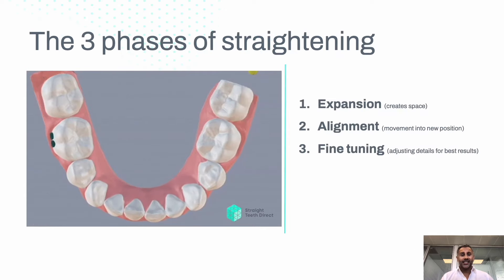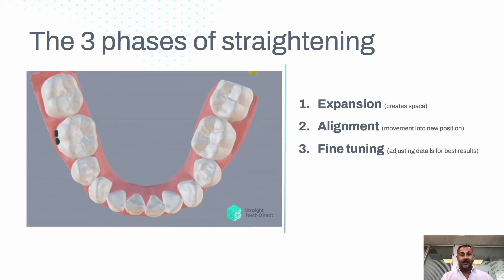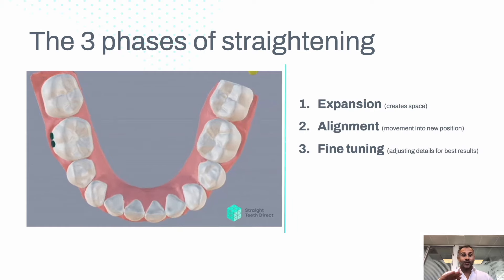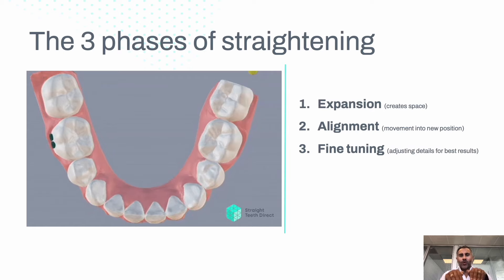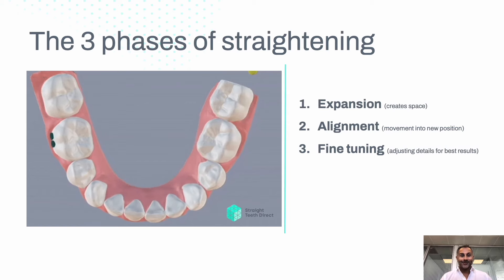We have three phases to the straightening protocols we use. Expansion, to create the space — the little gaps between the teeth. Alignment, to move the teeth into new positions. And fine-tuning, which is adjusting the details when one tooth is thicker than the other, to make the smile most harmonious.